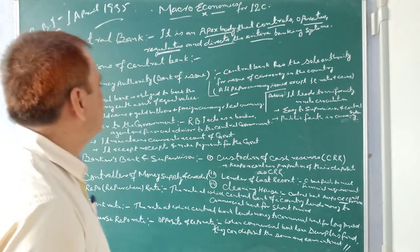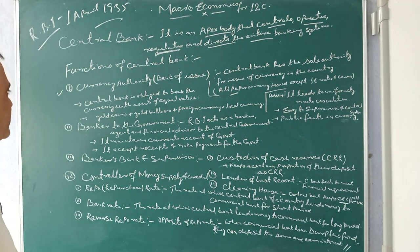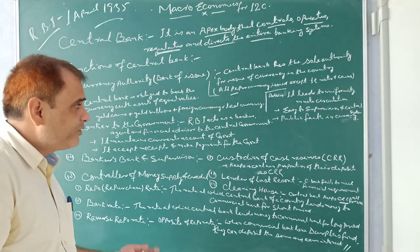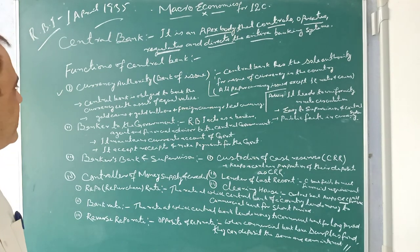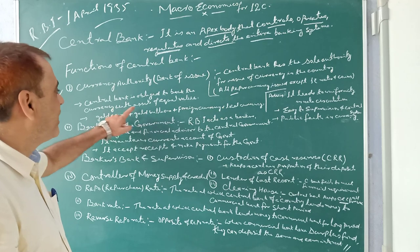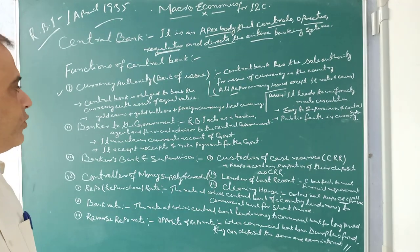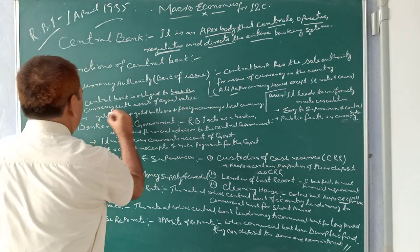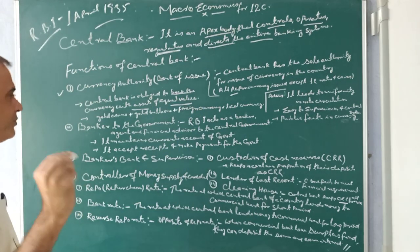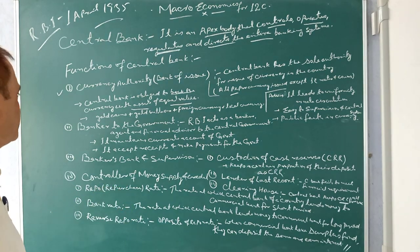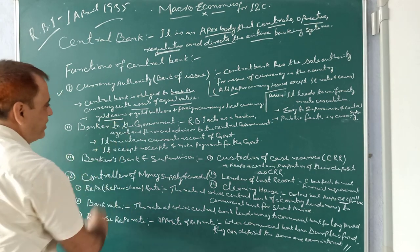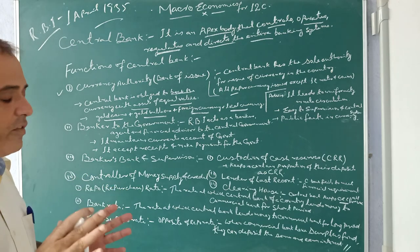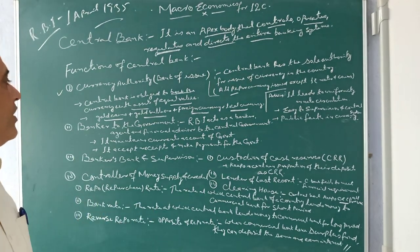One-rupee notes and coins are issued by the Finance Ministry. The central bank is obliged to back the currency with assets of equal value. Whatever paper notes and currency they want to issue, they will keep an equivalent reserve — assets like gold, gold reserves, and foreign currency — and with those same assets of equal value, they can then issue paper notes.